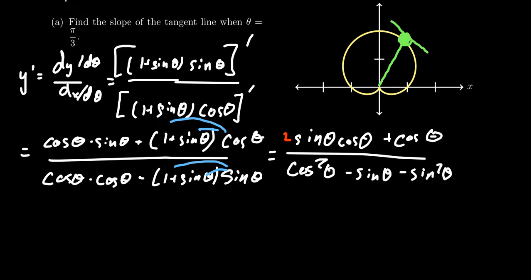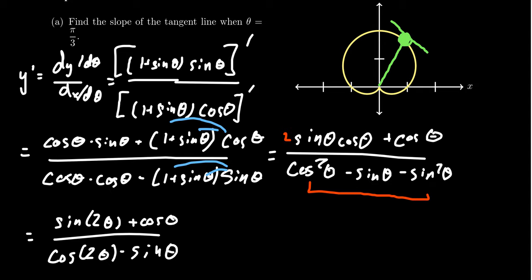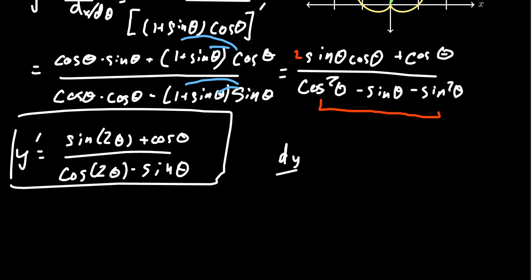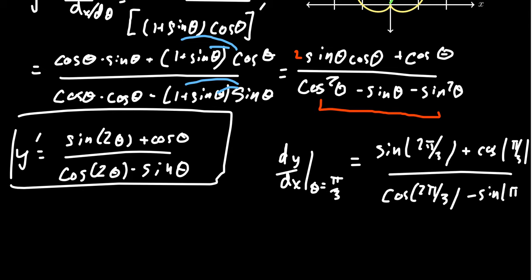To simplify, we use trig identities. Notice that 2 sine theta cosine theta is the double angle identity, so we get sine of 2 theta plus cosine theta on top. Cosine squared minus sine squared is the double angle identity for cosine, giving cosine of 2 theta minus sine theta on the bottom. So dy over dx equals sine of 2 theta plus cosine theta over cosine of 2 theta minus sine theta. Plugging in theta equals pi thirds, we get sine of 2 pi thirds plus cosine of pi thirds over cosine of 2 pi thirds minus sine of pi thirds.